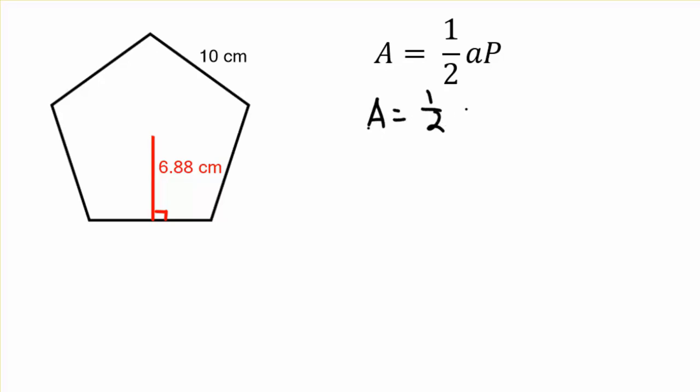It's one-half of the apothem, the 6.88 centimeters, times our perimeter. Perimeter is going to be 10 centimeters times 5 sides. 1, 2, 3, 4, 5 sides on the pentagon.